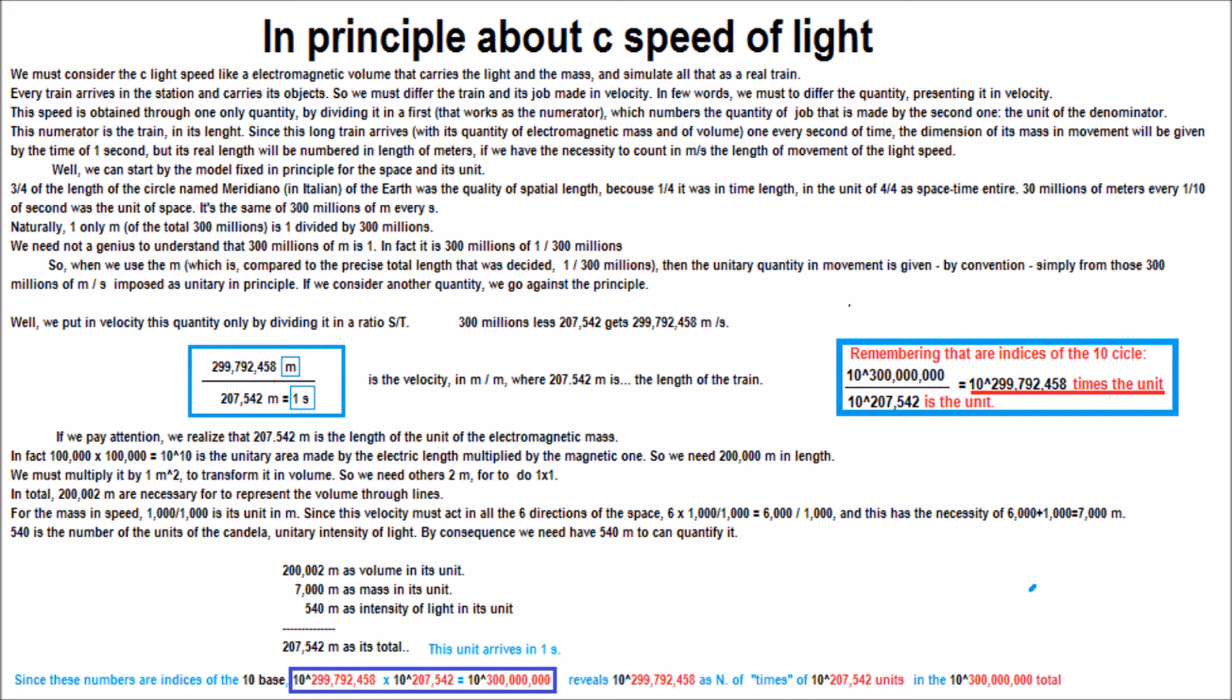In fact, 100,000 by 100,000 equals 10 to the 10 is the unitary area made by the electric length multiplied by the magnetic ones. So we need 200,542 m in length. We must multiply it by 1 square meter to transform it in volumes, so we need others 2 meters for to do 1 by 1. In total, 200,002 meters are necessary to represent the volume through lines.